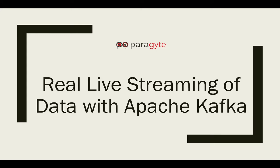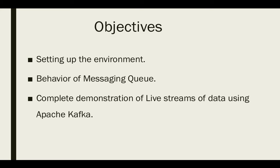Apache Kafka is designed for distributed high-throughput systems. Kafka tends to work very well as a replacement for a more traditional message broker — it is essentially a message broker. In comparison to other messaging systems, Kafka has better throughput, built-in partitioning, replication, and inherent fault tolerance, which makes it a good fit for large-scale message processing applications.